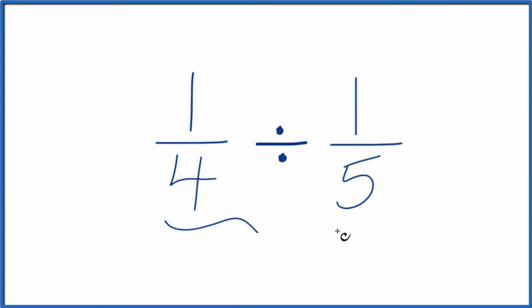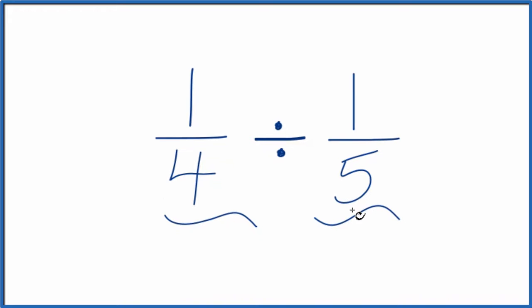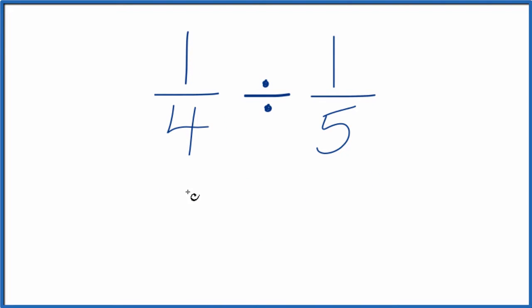If you're asked to divide 1/4 by 1/5, here's how you can do that. So let's say 1/4, but instead of division, let's multiply. We're going to multiply by the reciprocal of 1/5. So the 1 goes to the bottom, and we move the 5 up to the top here.